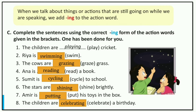Complete the sentence using the correct ING form of action word given in the bracket. One has been done for you. The children play cricket - play is the simple form. When we talk about things or actions that are still going on - present continuous - the children are playing cricket. Rhea is swimming. The cows are grazing grass.